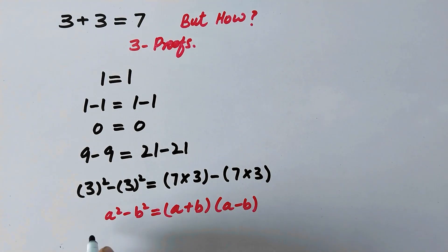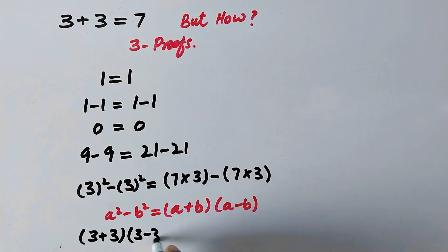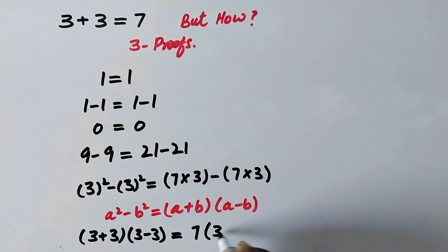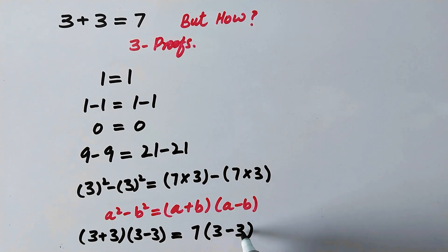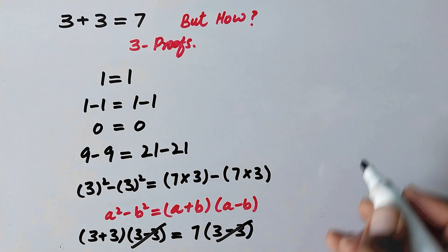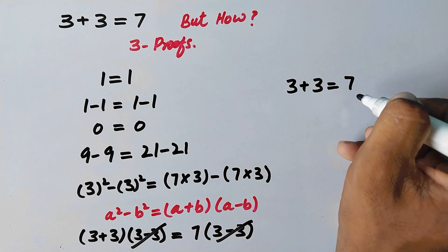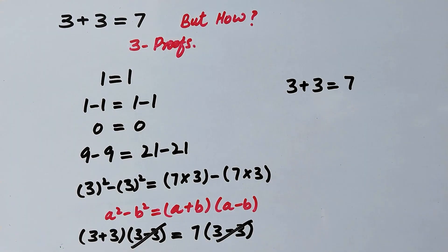So now we can write (3 plus 3)(3 minus 3) is equal to, taking 7 as common from the right side, it becomes 7 times (3 minus 3). Now the value (3 minus 3) is the same on both sides, so we can cancel it. And we are left with 3 plus 3 is equal to 7. And here is our first proof.